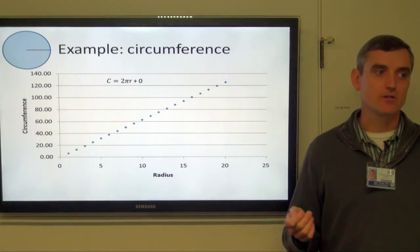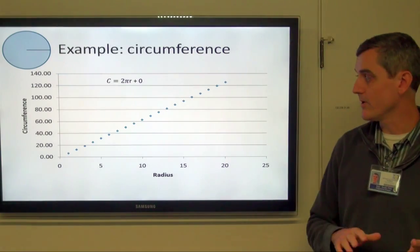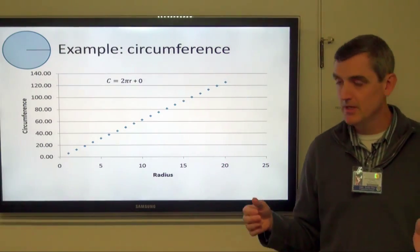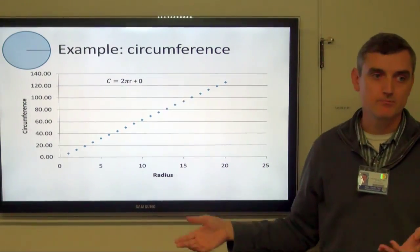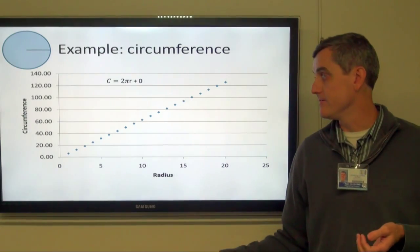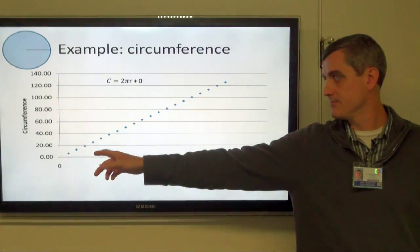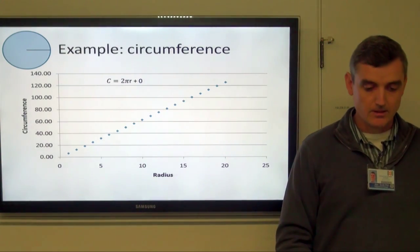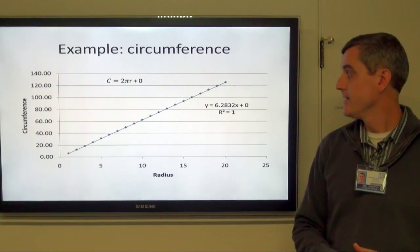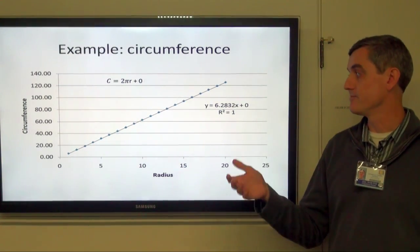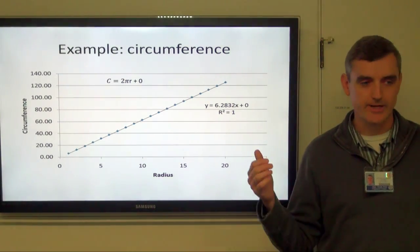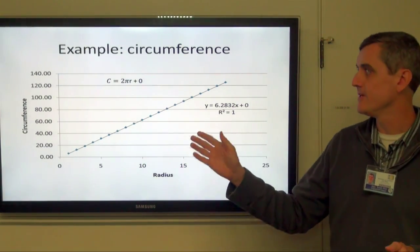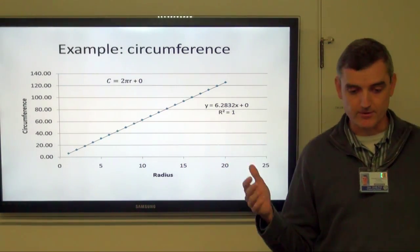A great example is the circumference of a circle, represented by the formula circumference equals 2πr, plus zero because the circumference when the radius is zero is zero. If we model that, it's going to be 6.2832x plus 0, and r squared is going to be 1, because it's a perfect predictor of the circumference if you know the radius.